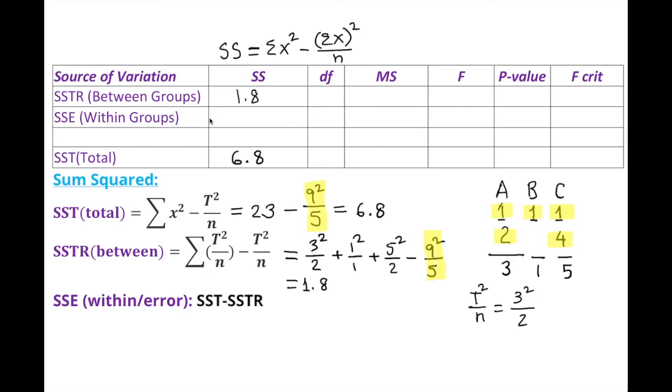Now we look for the error. Error means the difference between these two. So 6.8 minus 1.8 gives us 5. In the middle, error is 5.